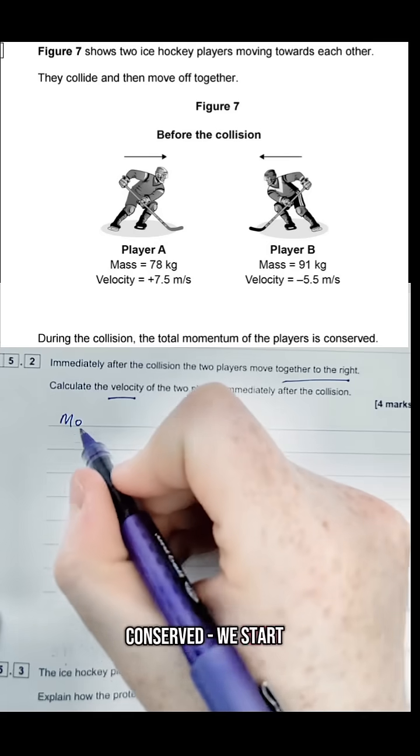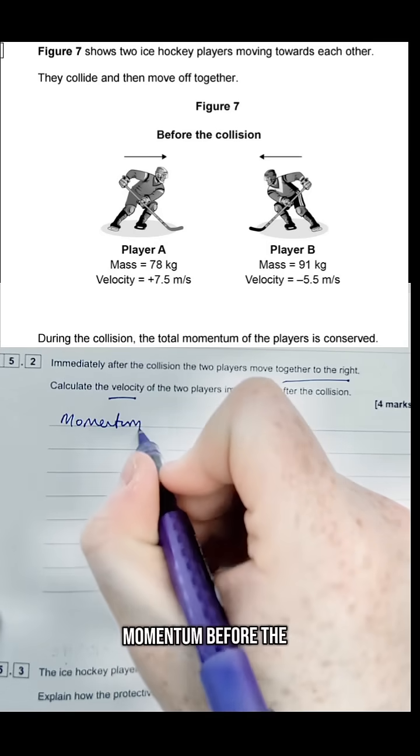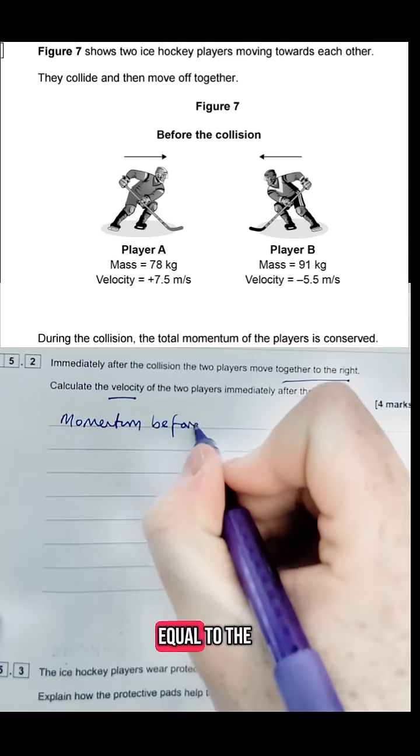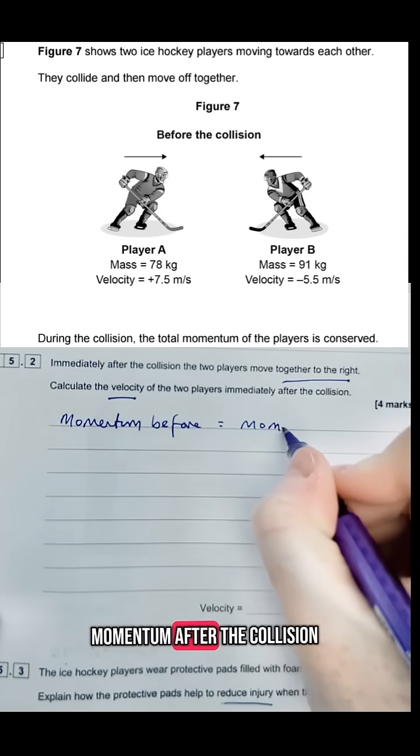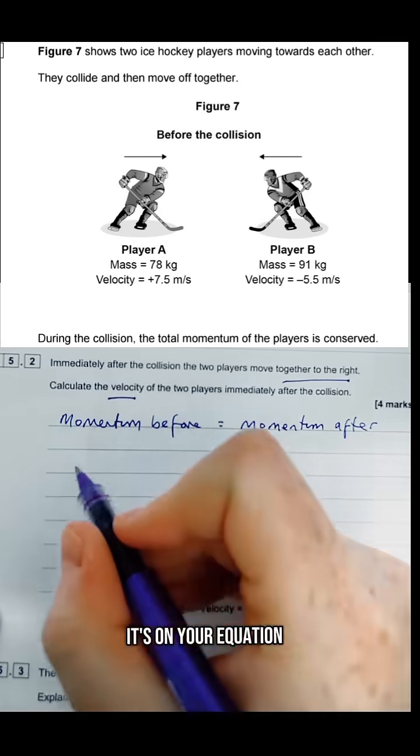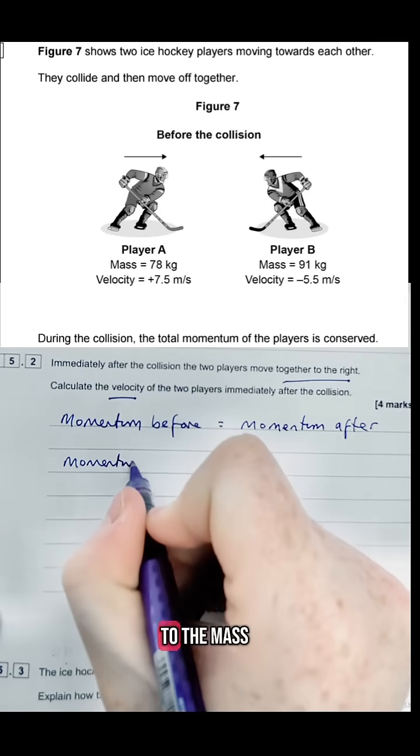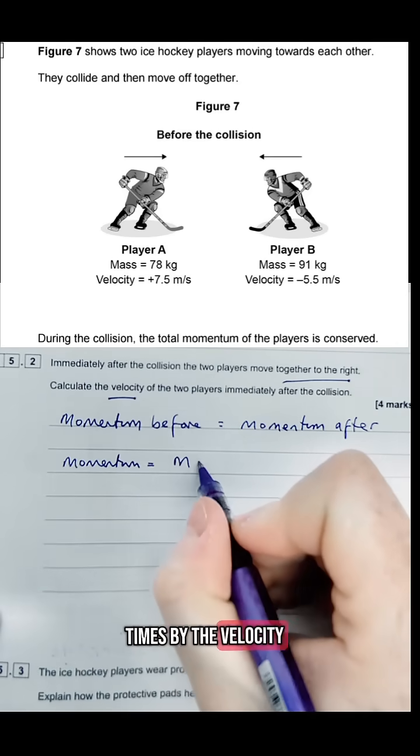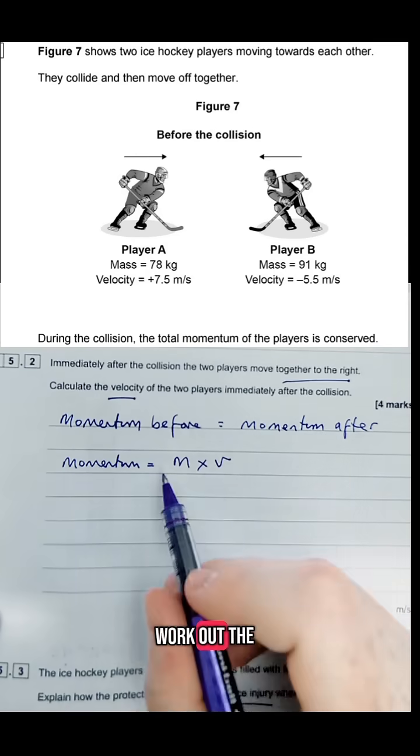So if momentum is conserved, we start off with that point and we say momentum before the collision is going to be equal to the momentum after the collision. To calculate the momentum is quite an easy equation. It's on your equation sheet and momentum P is equal to the mass times by the velocity of any object you're trying to work out the momentum of.